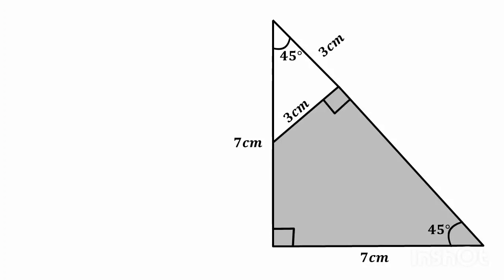Now the shaded area will be equal to area of the large triangle minus area of the small triangle. Putting values we will get this. Simplify this and we will get this. Now take the LCM.